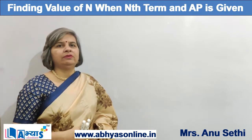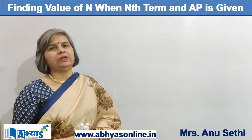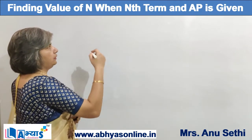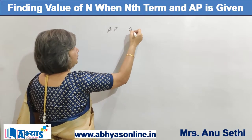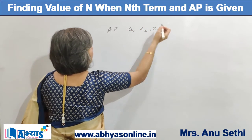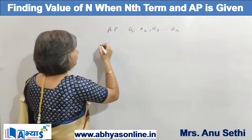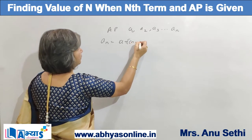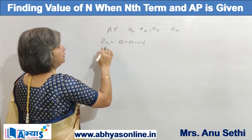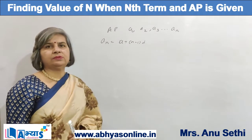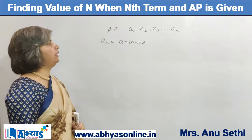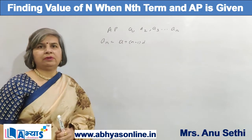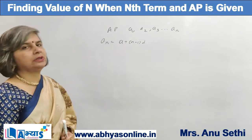Now, I am going to discuss the concept of finding the value of n when the nth term of an AP is given and the AP is also defined. We know that the nth term is given by the formula: a_n = a + (n - 1) × d. Whenever we use this formula to find the value of n, we are given 'a', find 'd' from the AP, and use the concept of linear equations to solve.